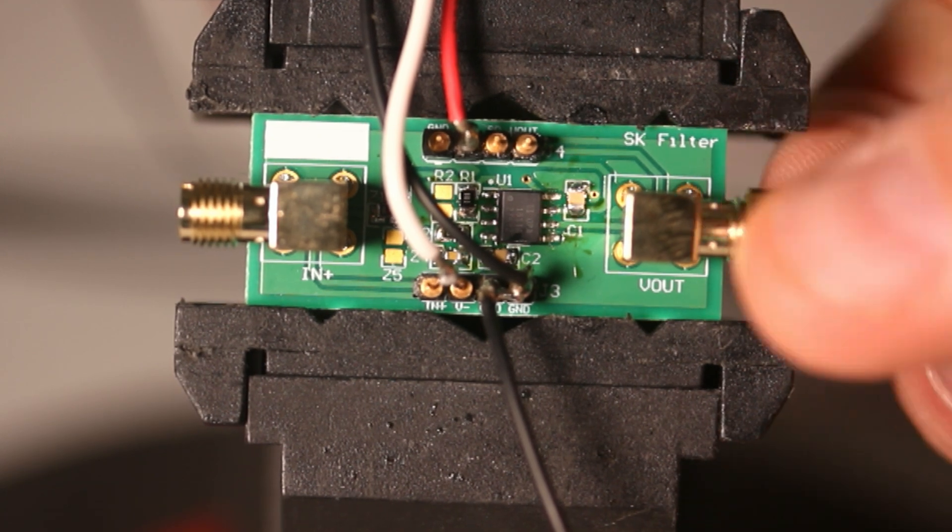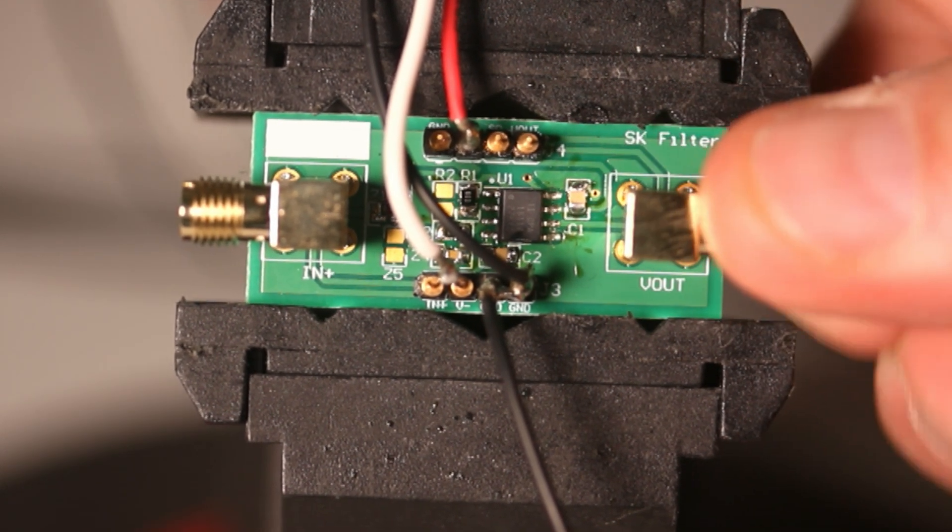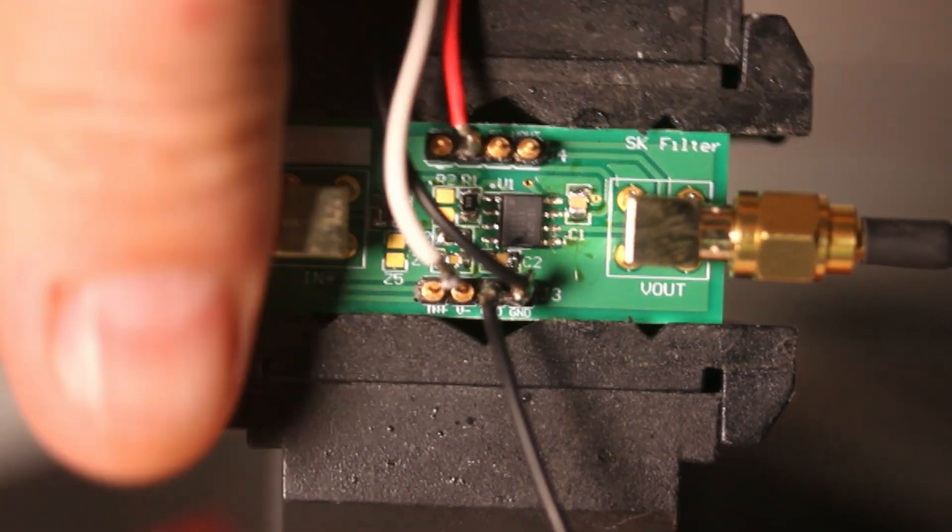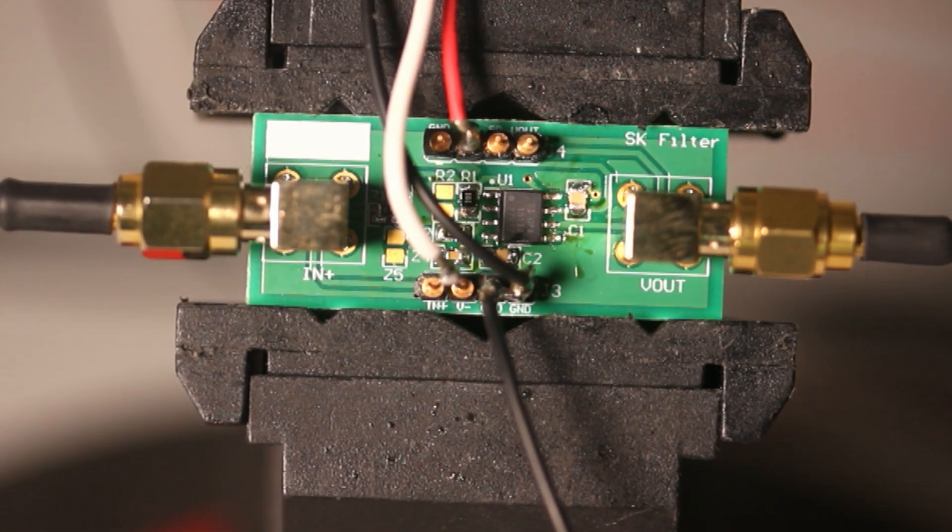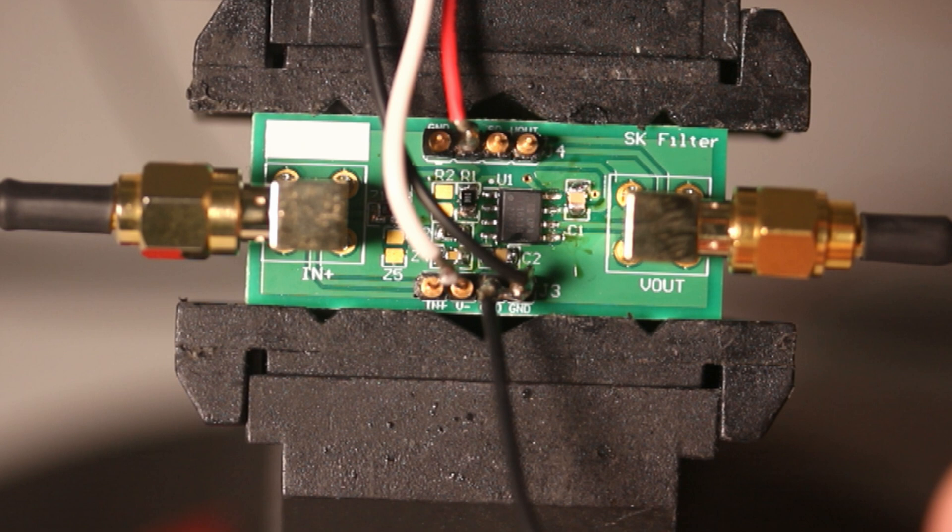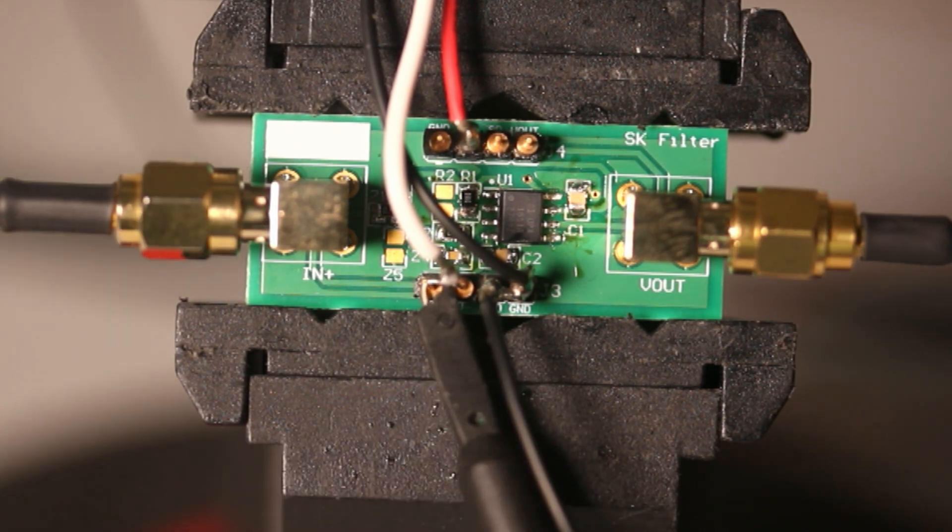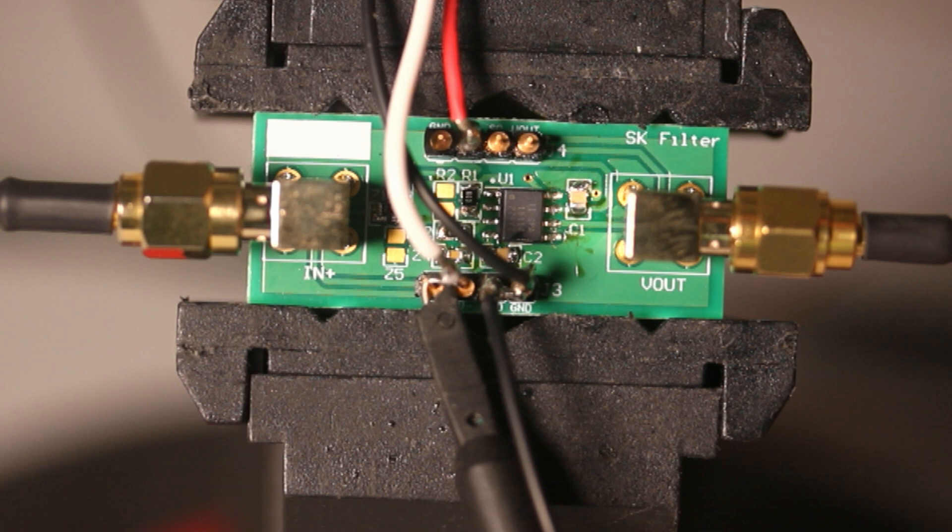With our plus and minus 5-volt DC supply rails fitted, we connect the SMA RF connectors, which allow us to measure the filter response in the frequency domain using our vector network analyzer. In addition, we connect scope probes to the input and output signals so we can monitor the time domain waveform simultaneously.